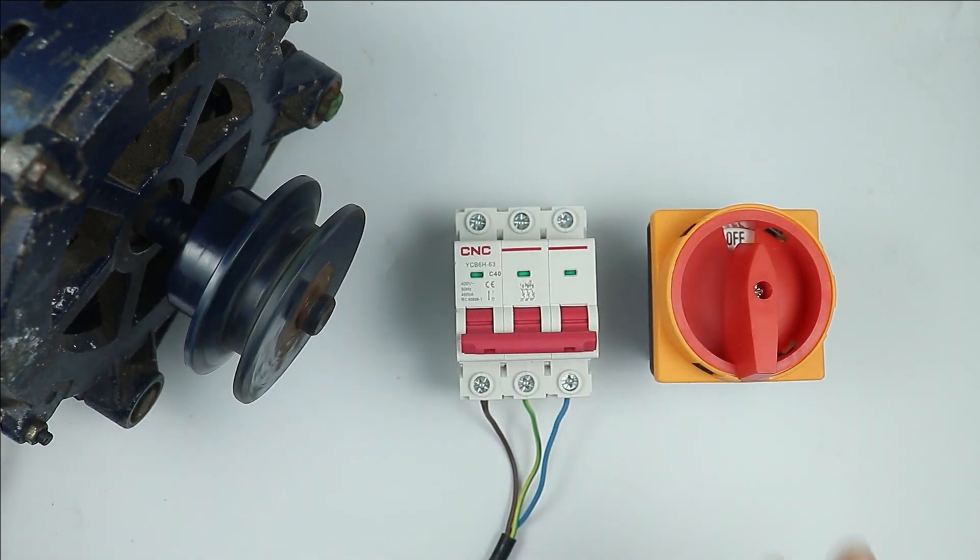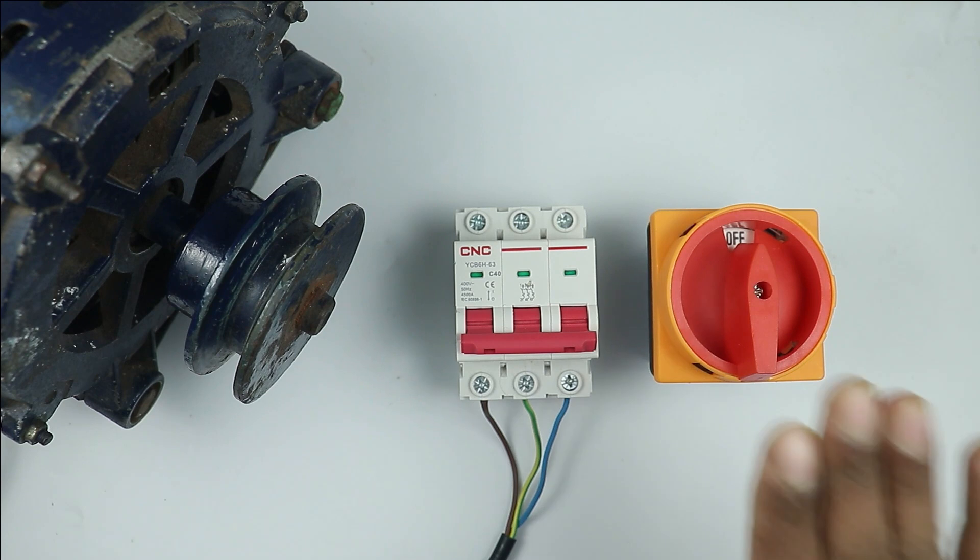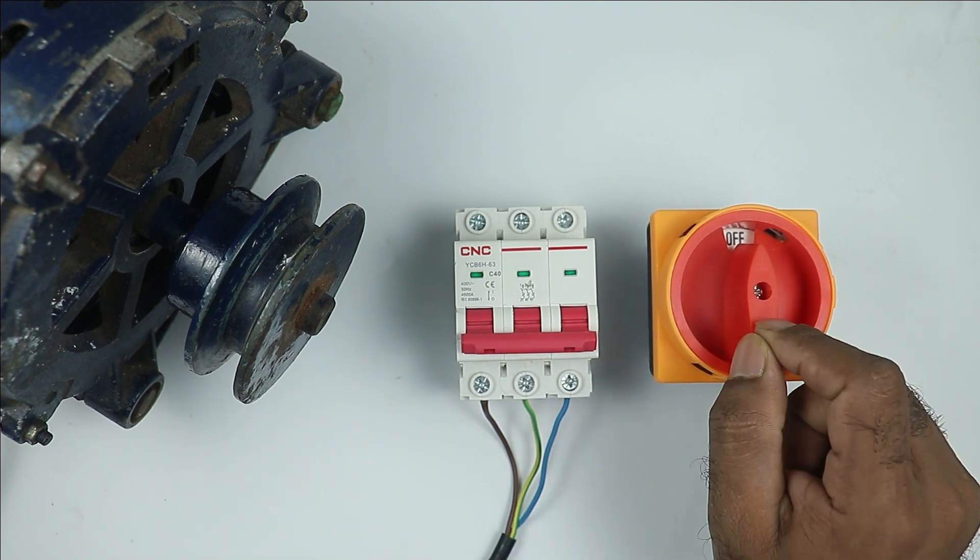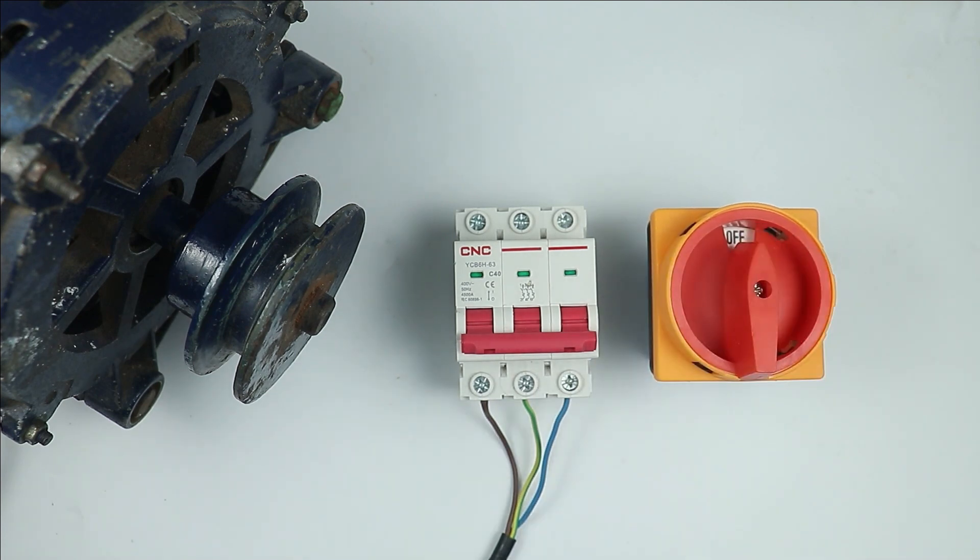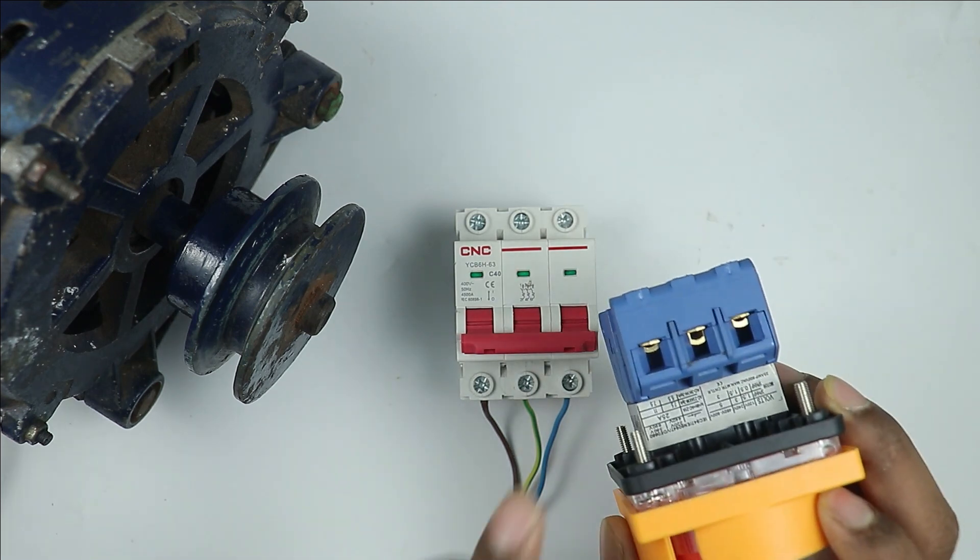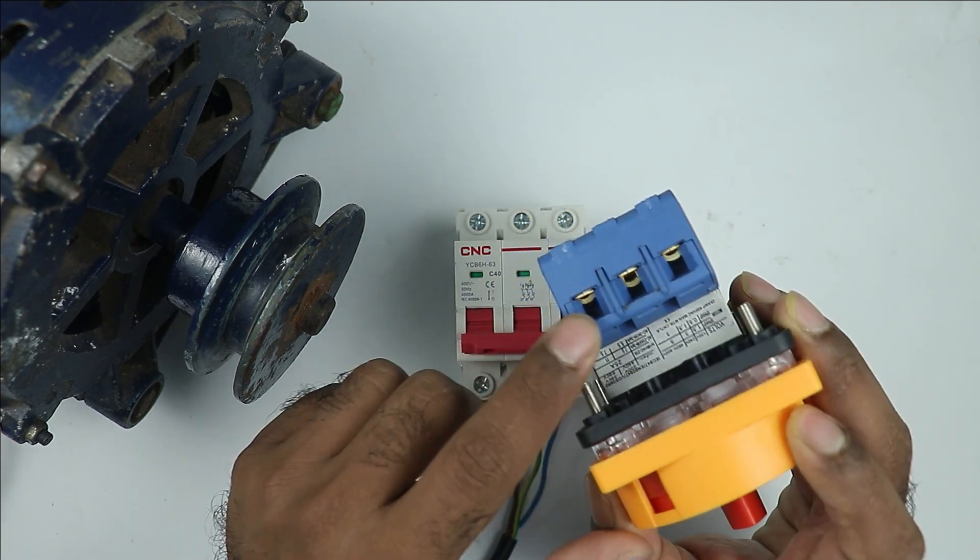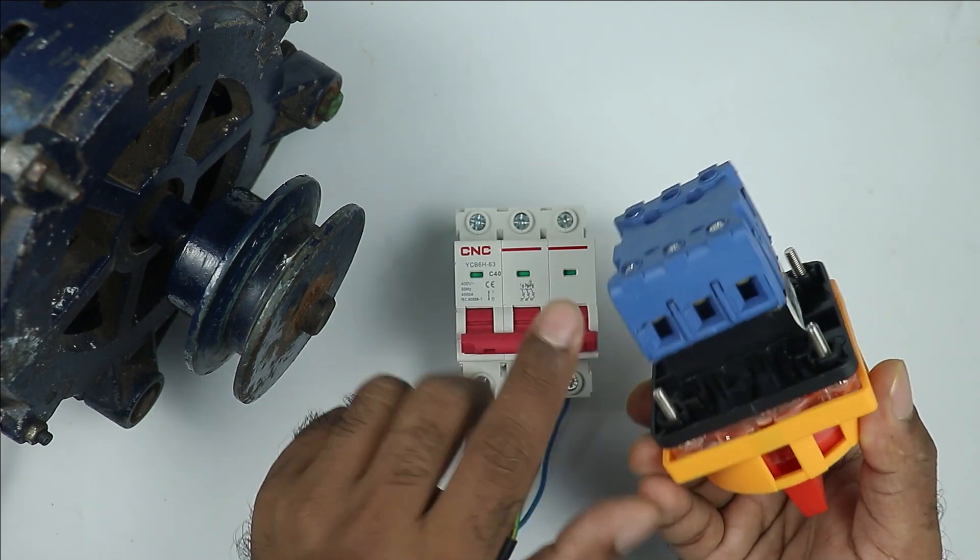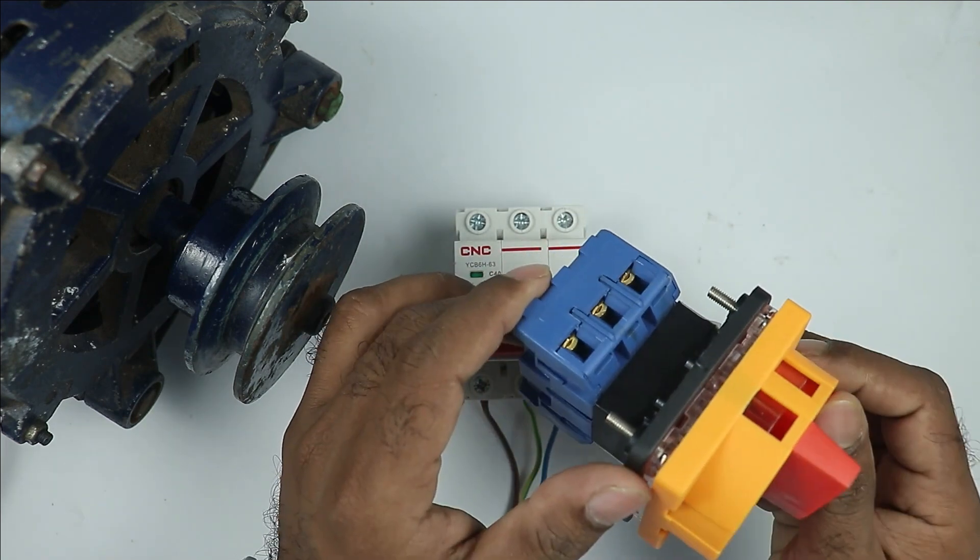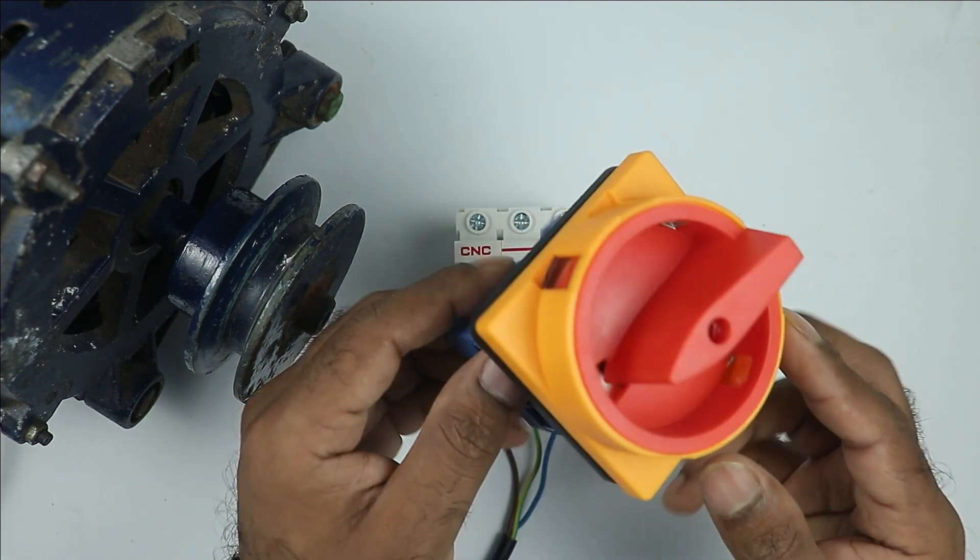If we want to turn on and off this three-phase motor, then the switch used for this purpose should also be three-phase. As you can see at the output terminal, there are three terminals. Three on this side and three on this side. It means by using three-phase supply, you can use this rotary switch.